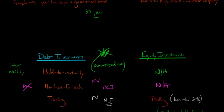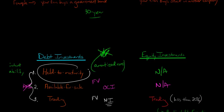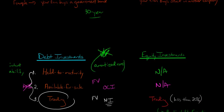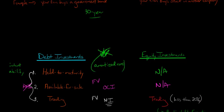So debt investments can be classified as held to maturity, trading, or available for sale — three different classifications. Think about it like this: if you intend and have the ability to hold it to maturity, it's held to maturity. If you intend to sell it in the near future, say in a month or two, it's trading. If you don't know what you're going to do with the debt investment, it's available for sale. With an equity investment, you don't have much choice — if you own less than 20% of the company you invested in, it has to be trading.